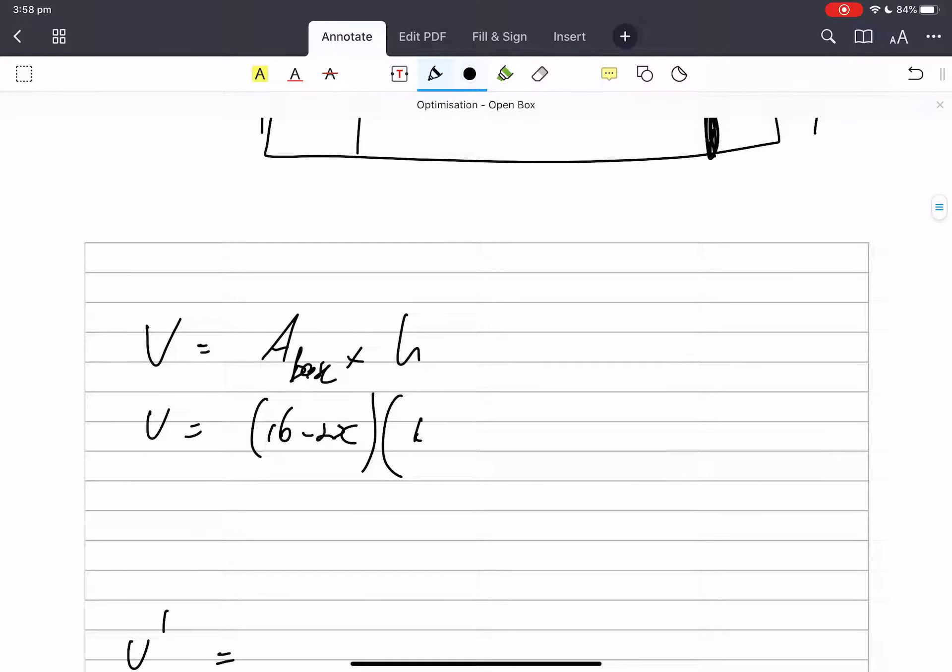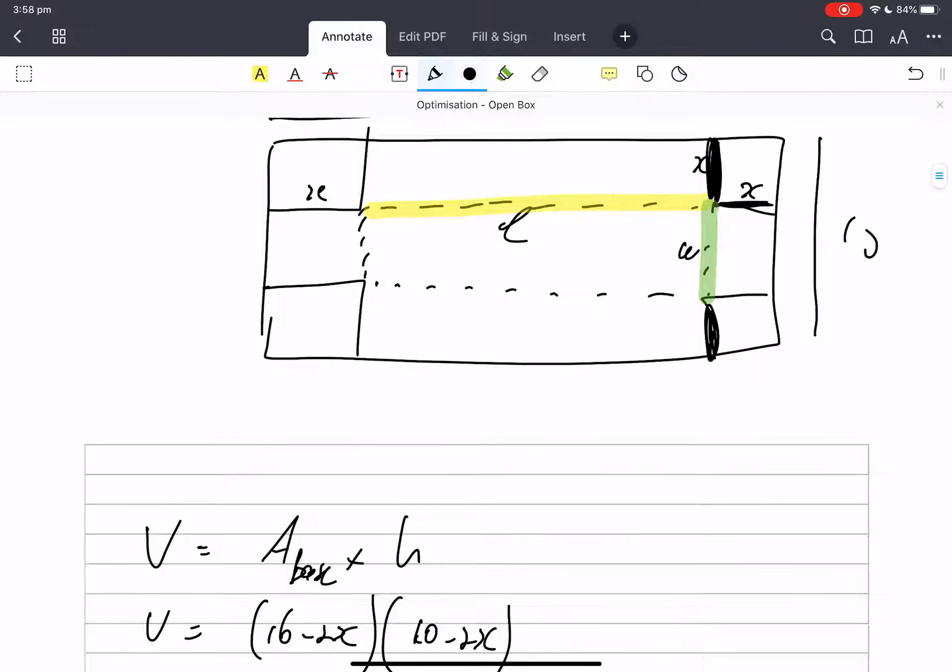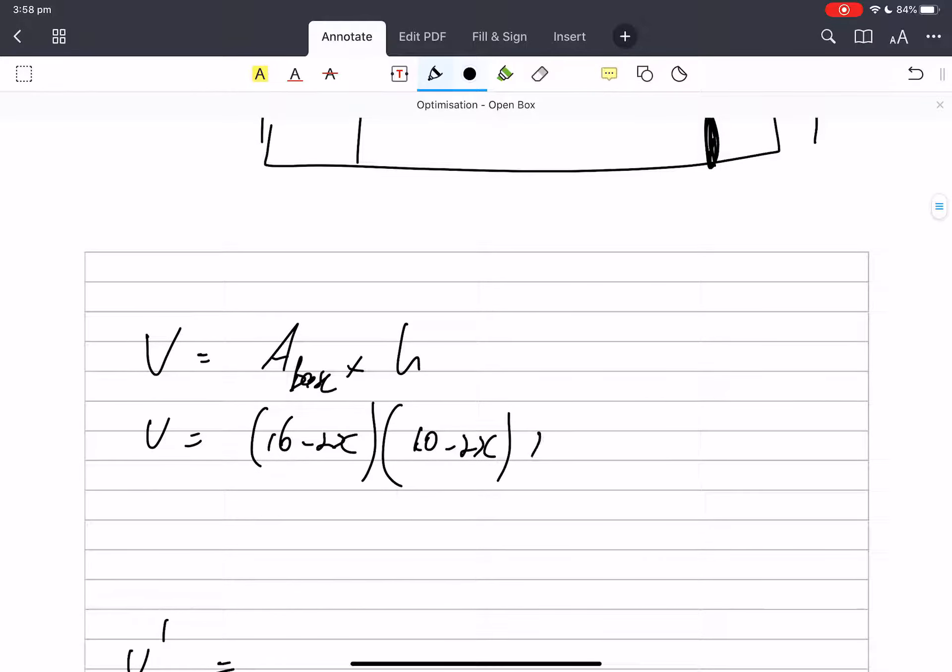And then the height is, well, this x, because they're going to be folded up. There's my volume. Let's just see what that expands to. You're going to expand that manually, but I don't have enough room, so I've just got a handy dandy calculator here.